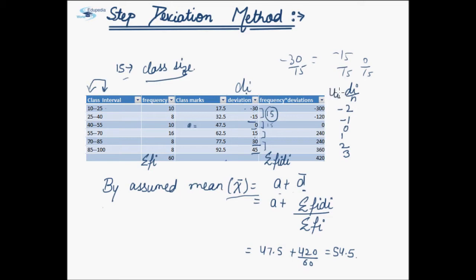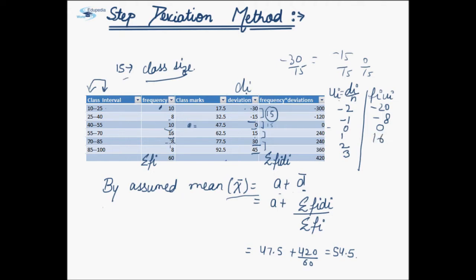Let us label this column as ui. Now friends, if we multiply this ui with the frequencies, that is fi*ui, a lot of calculation will be simplified. That is f1 multiplied by u1 will be minus 20. 8 multiplied by minus 1 will be minus 8. And 10 multiplied by 0 will be 0. 16 multiplied by 1 will be 16. 8 multiplied by 2 will be 16. And 8 multiplied by 3 will be 24.